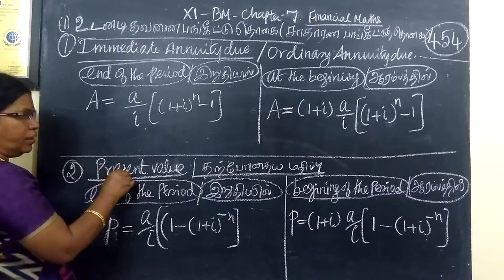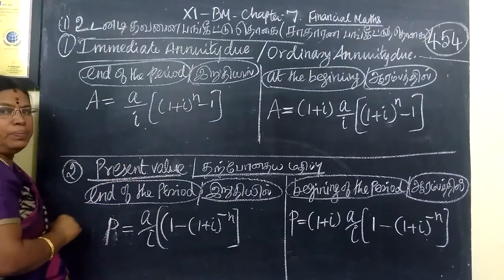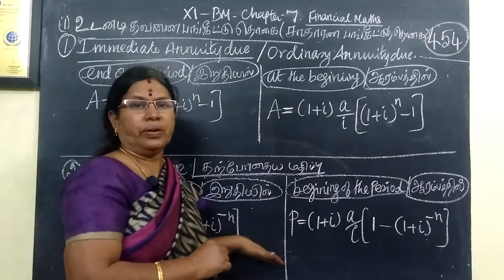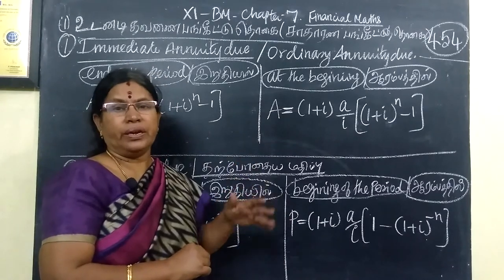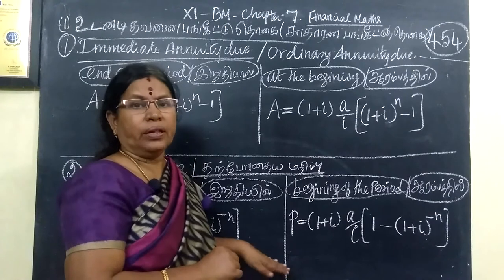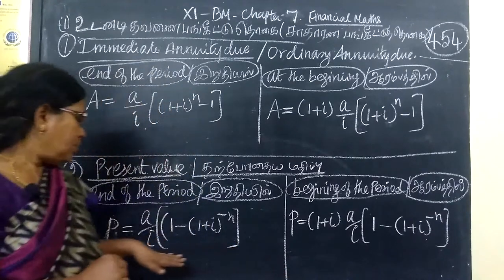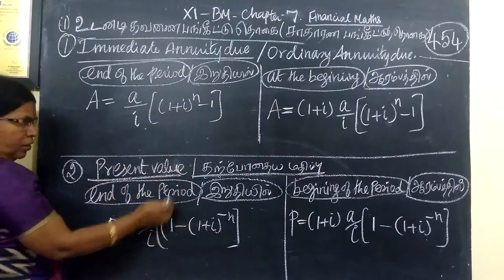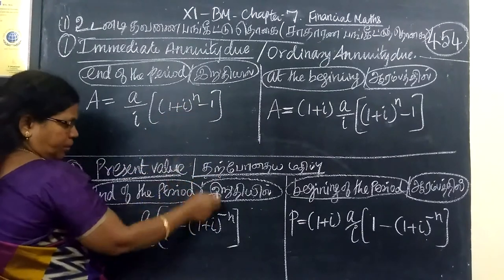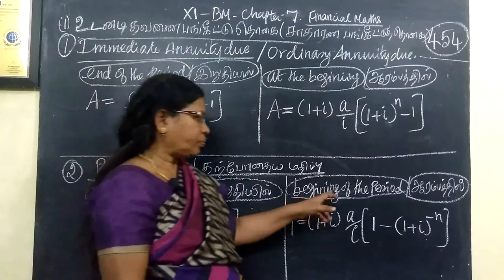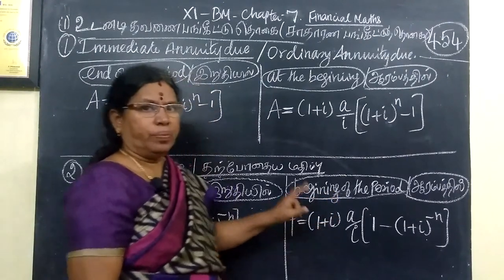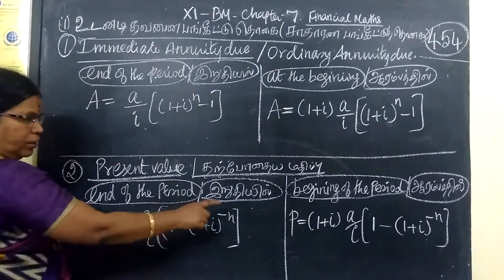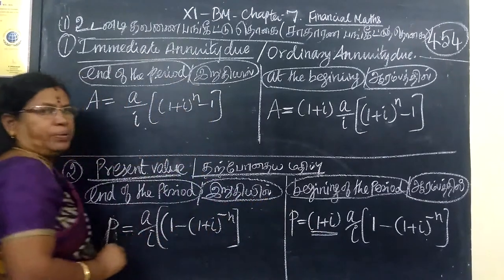At the end of the period, we will use this formula. Suppose we have a machine, and the machine is installed for 10 or 20 years. That's why we use the first step. P is equal to A by 1. The difference is the plus and minus. This is for the beginning — 1 plus i is done. At the end of the period, this is 1 plus i. This is the first step.